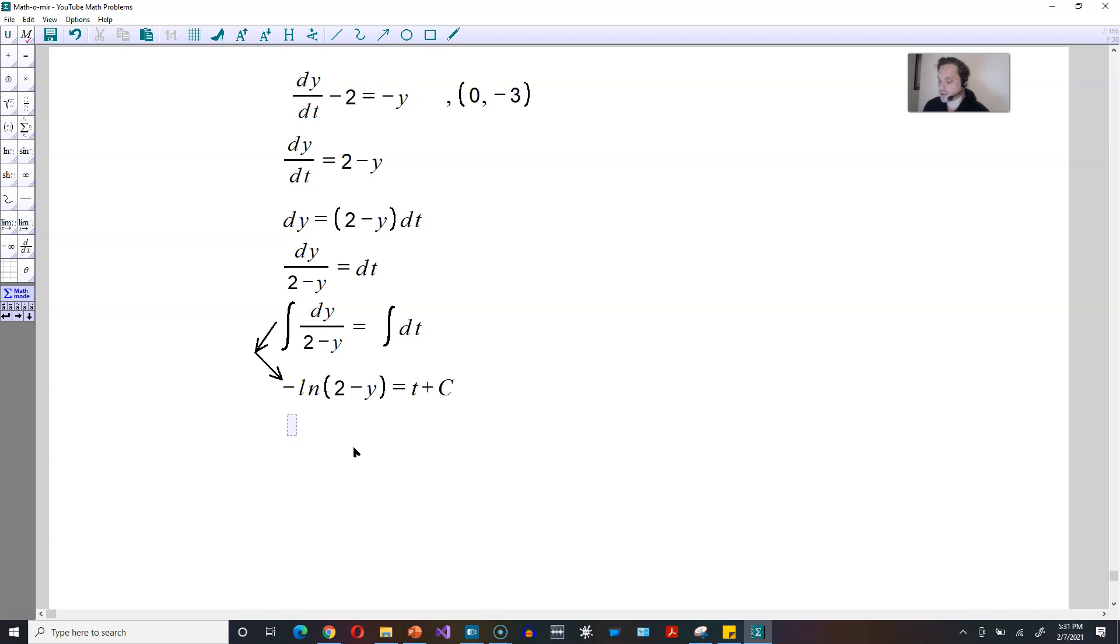I'm going to use the point (0, -3). So that means that t is equal to 0, and then y is equal to -3. You want to make use of that. So it's going to be negative ln, and it's going to be 2 minus that -3, the value of y, and the right side is going to be 0 plus c. So it's going to give you negative ln, and then 2 + 3 is 5 as the value of c.